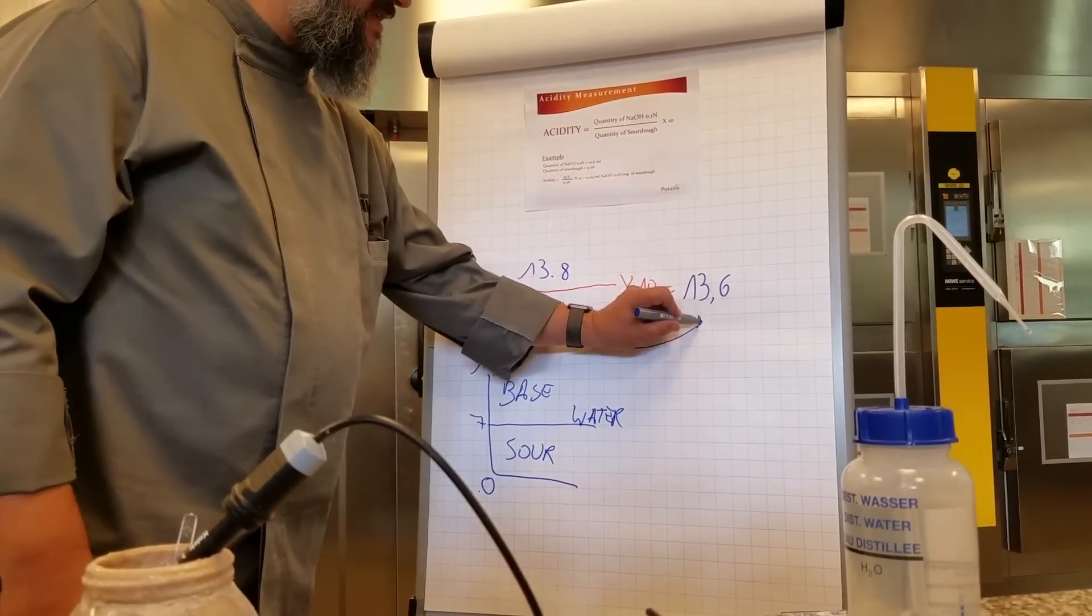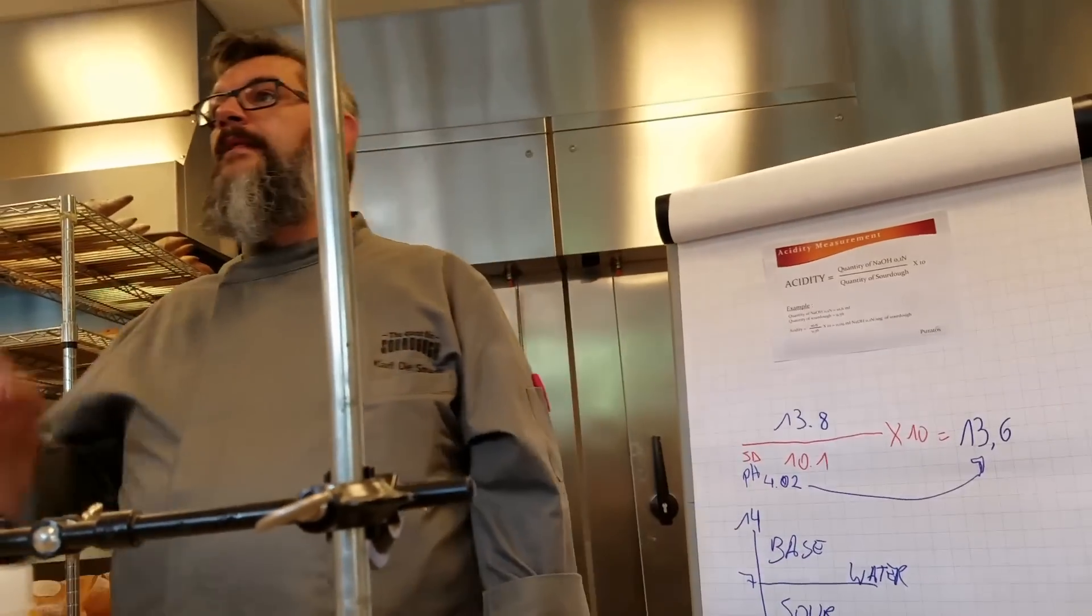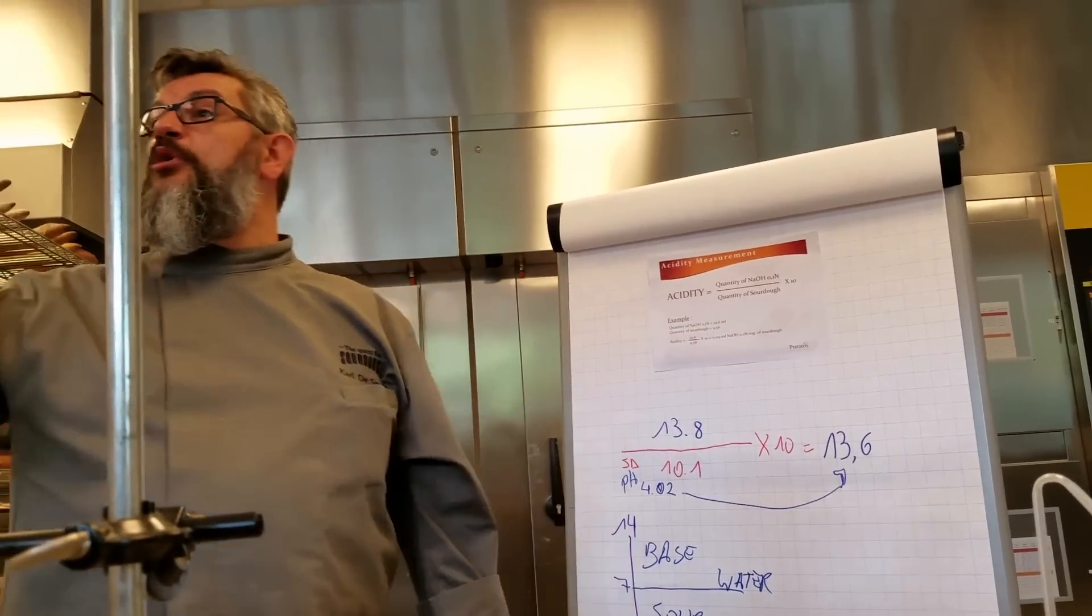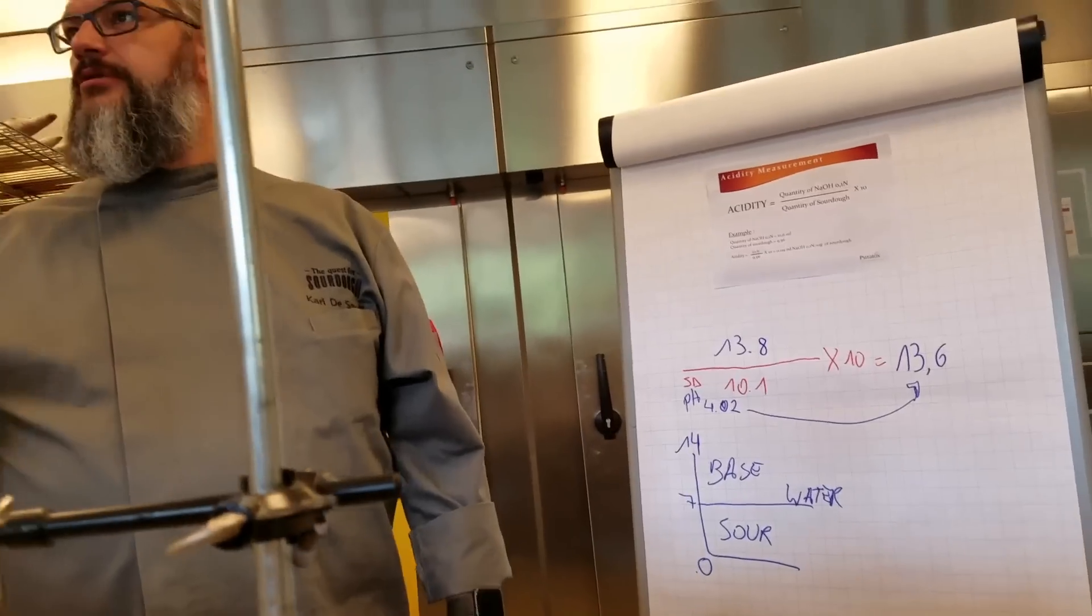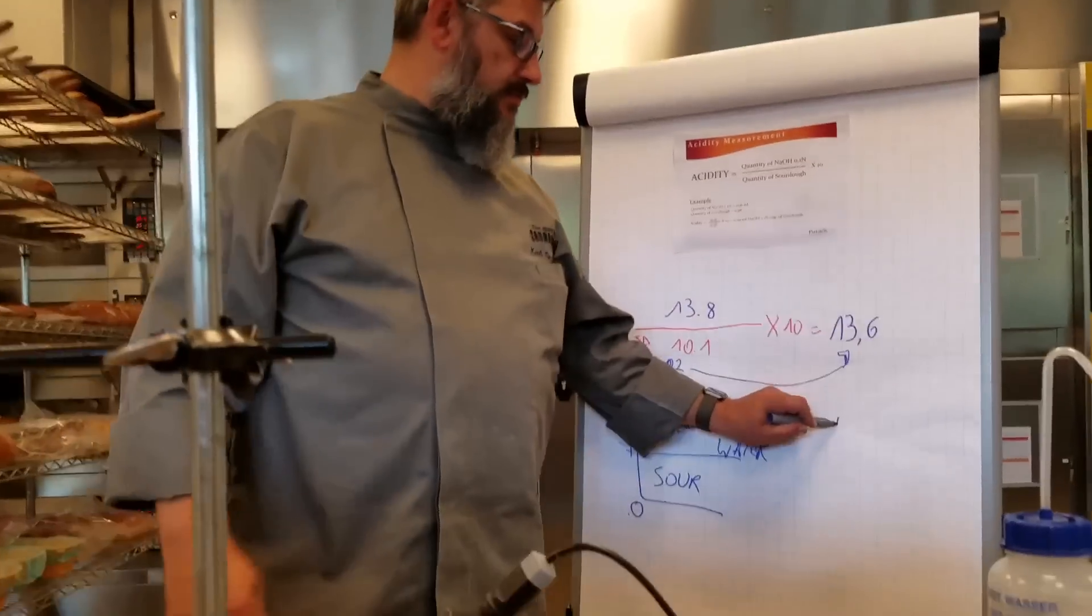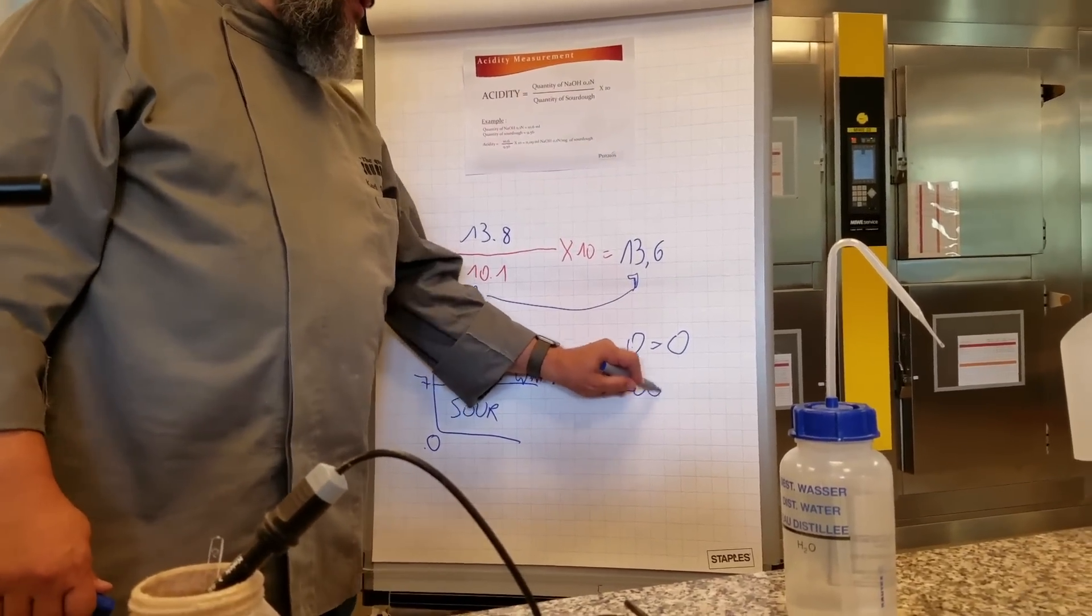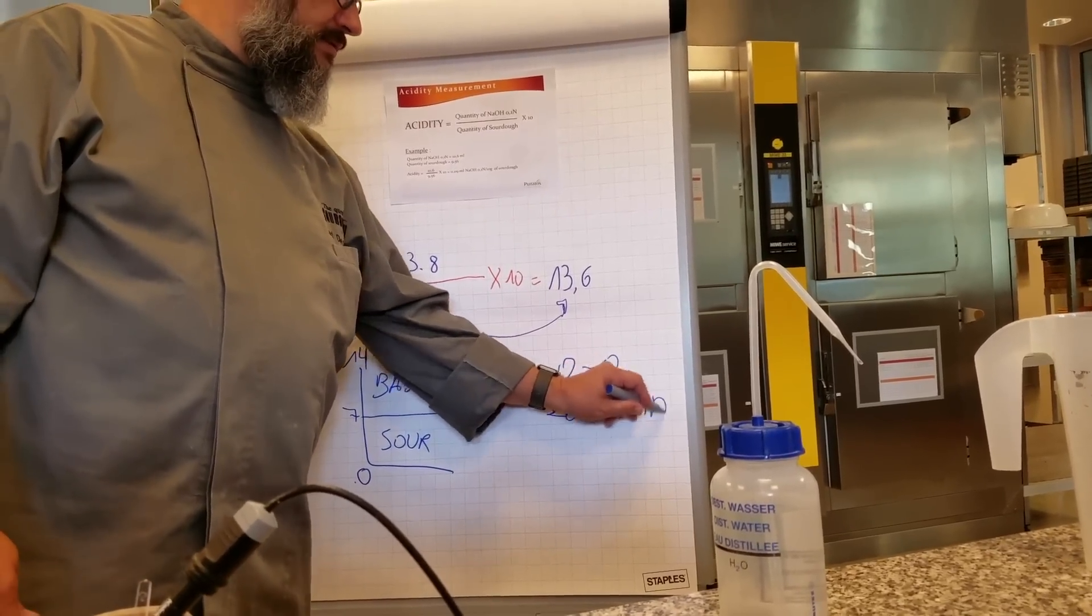So in here we have a pH for this sourdough of 4.02 with an acidity of 13.6. How is the scale for the TTA? No, a sponge or polish, for example, if you would measure a polish right after, you have zero. There is no acidity. So zero is zero. Imagine 200 degrees of TTA is very acid.